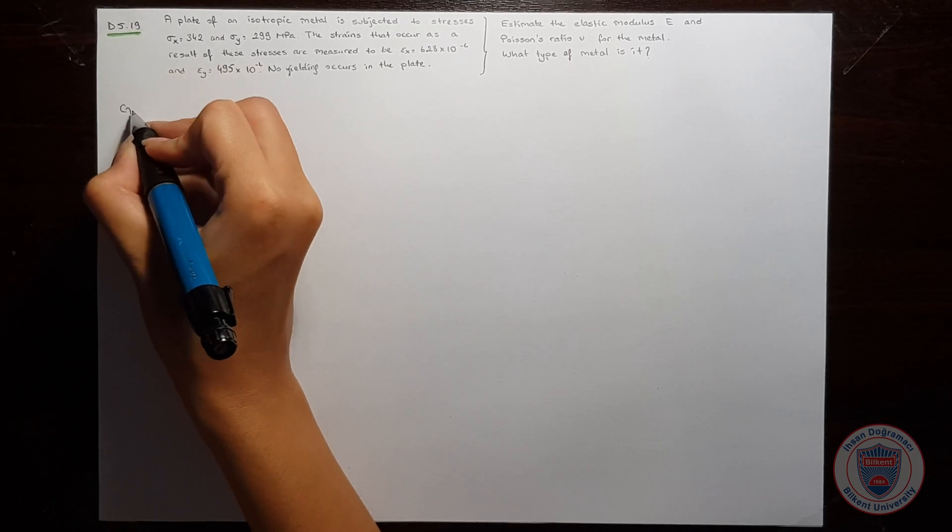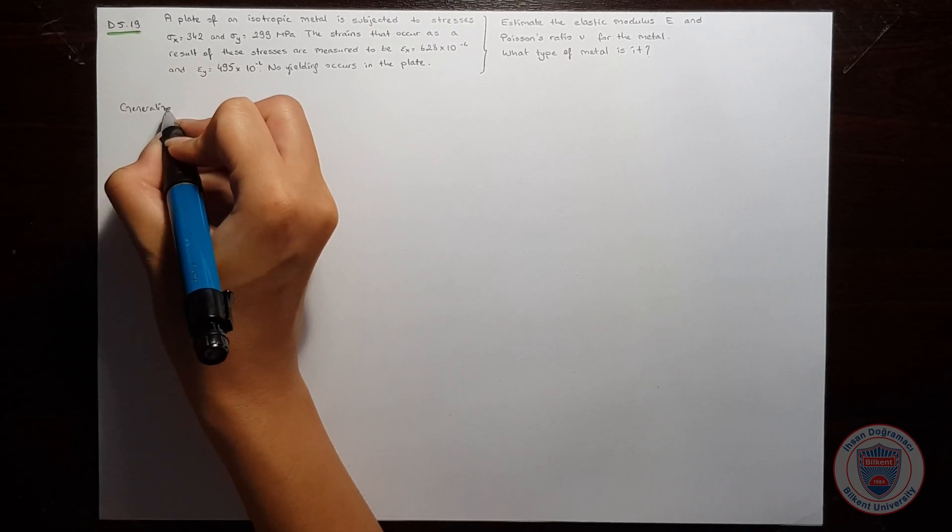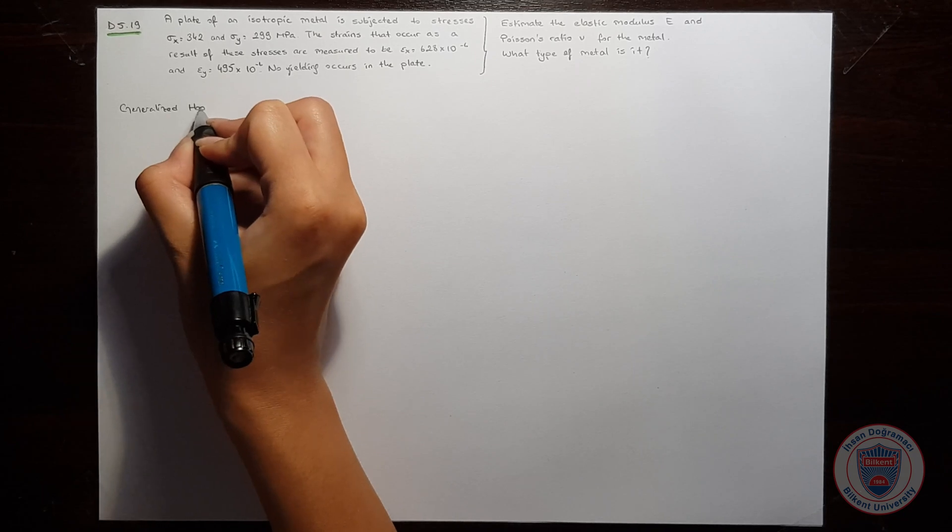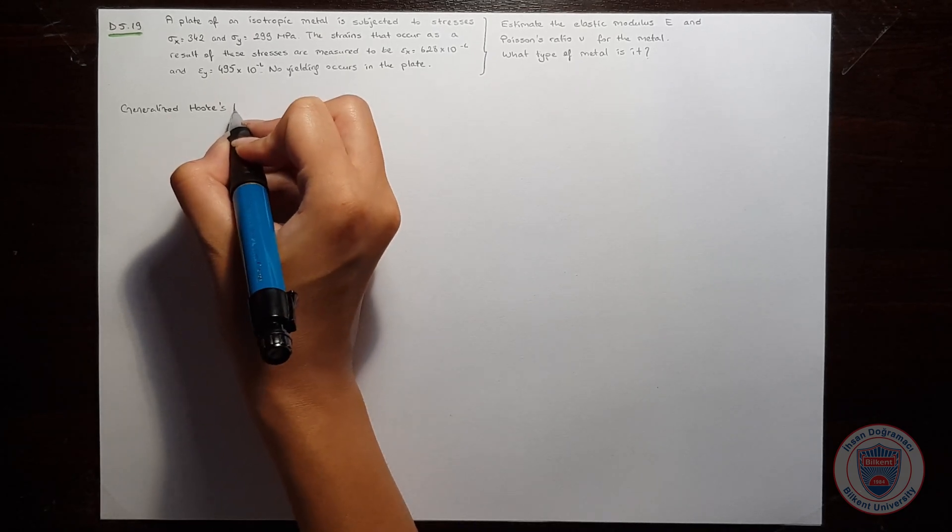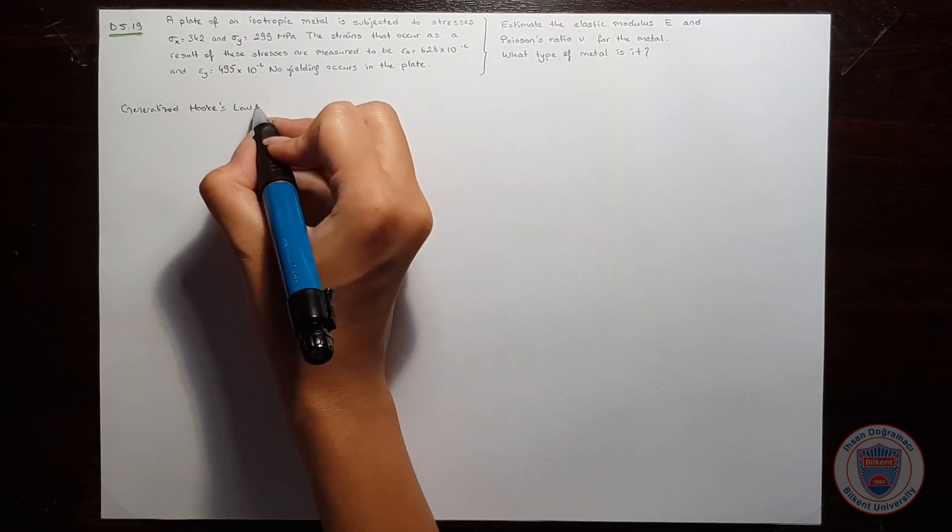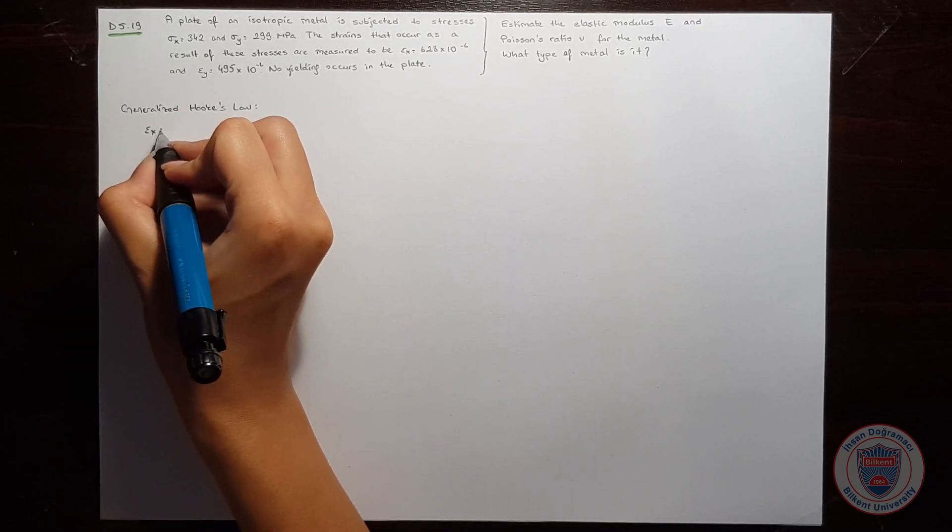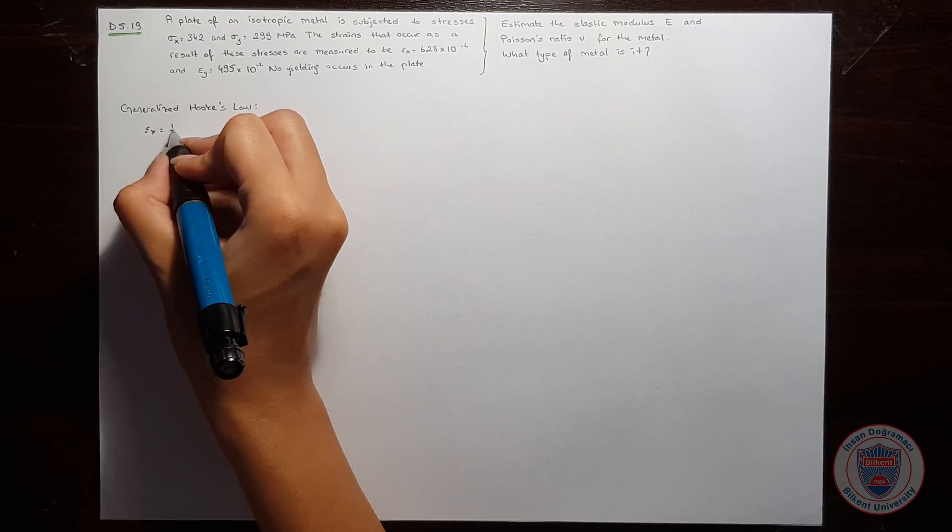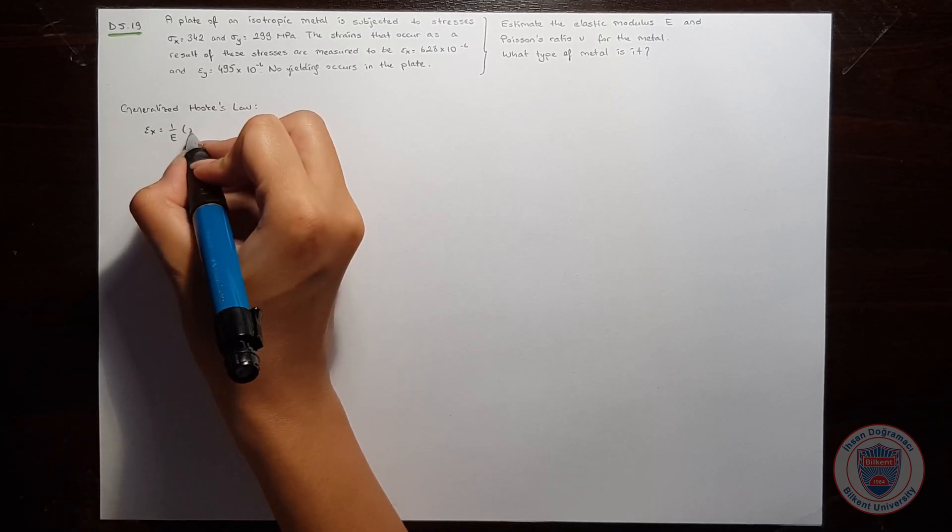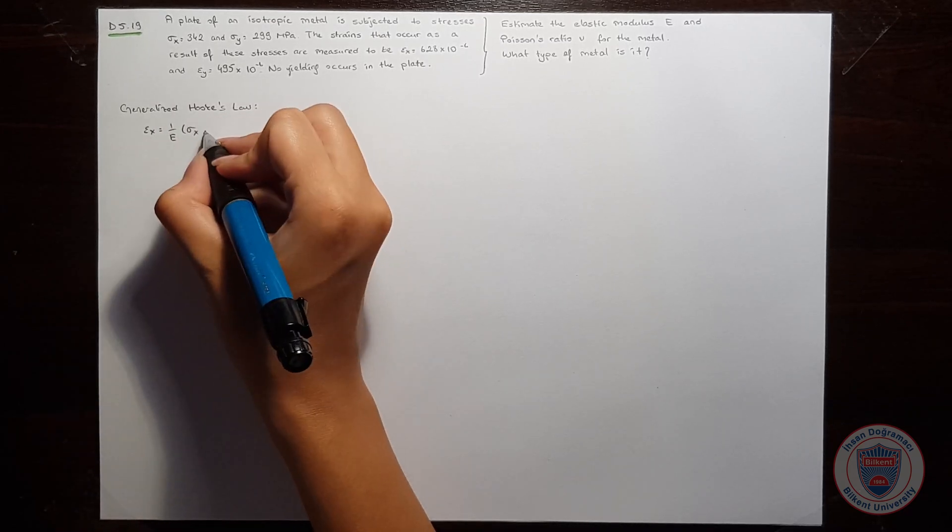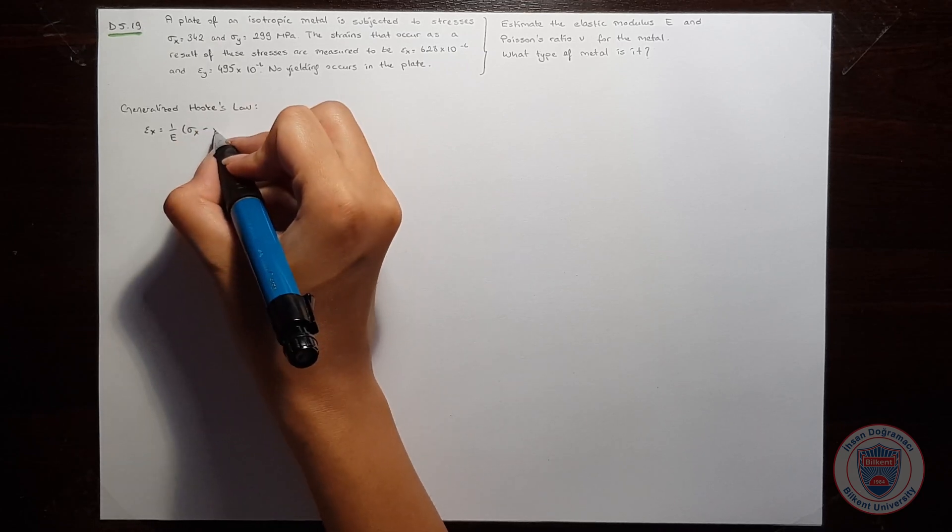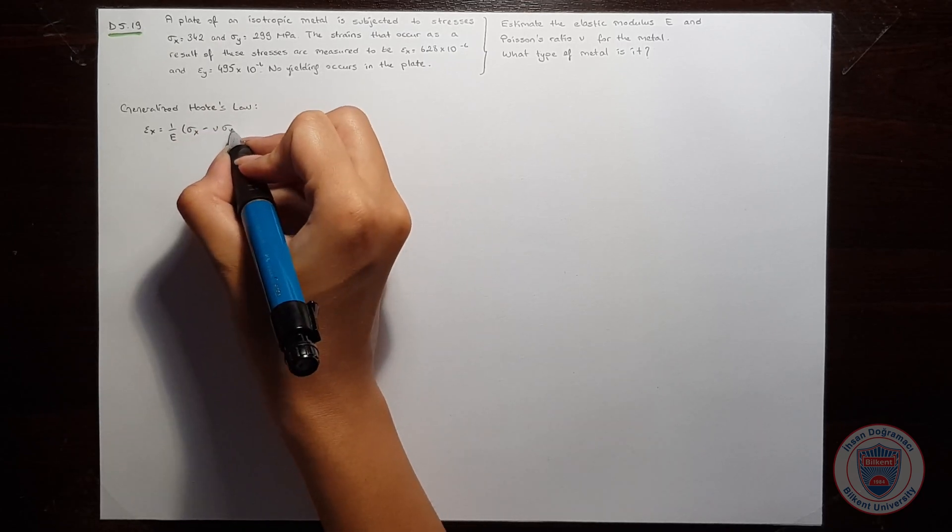We know that generalized Hooke's law says that εx is equal to 1 over E times σx minus Poisson's ratio times σy.